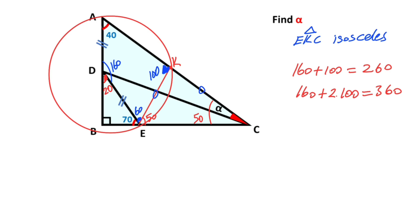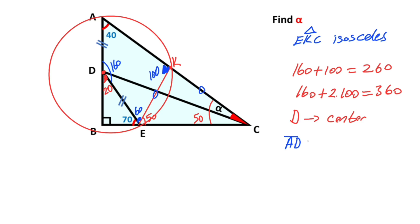Notice that the length of AD and the length of DE are equal. That means point D is the center of the circle. So AD and DE have become radii.